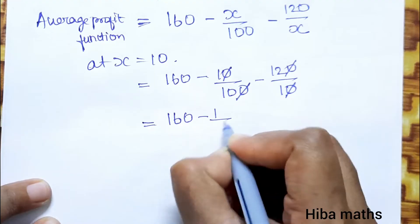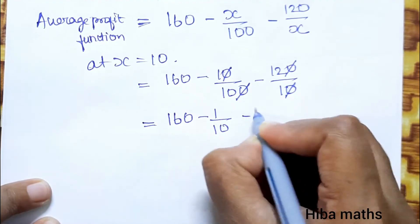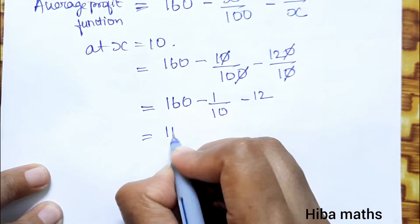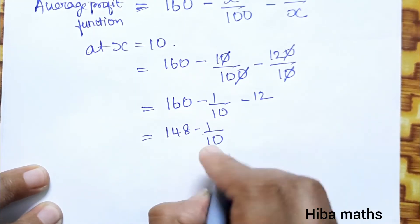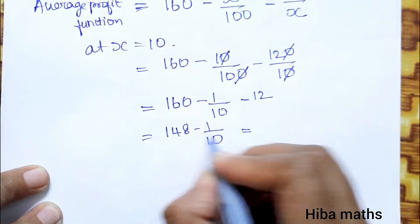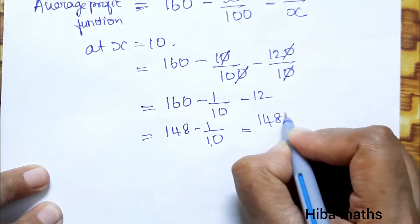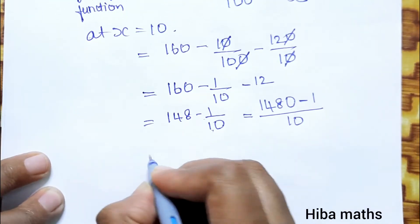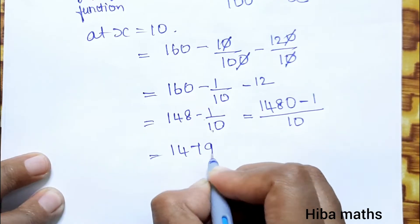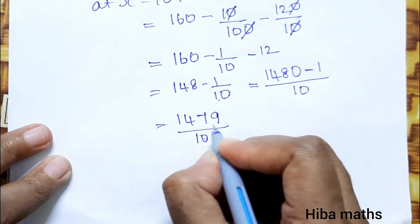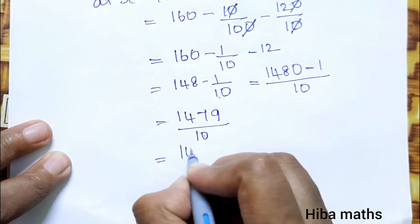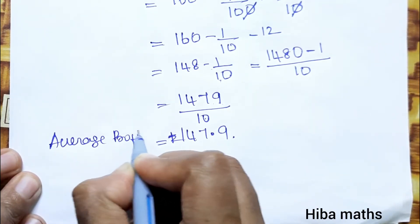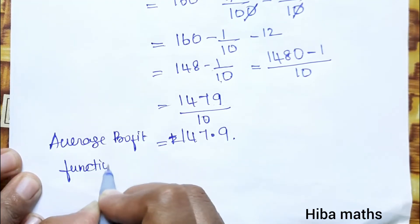Simplifying: 160 - 1/10 - 12 = 148 - 1/10. Cross multiplying: (1480 - 1)/10 = 1479/10 = 147.9. This is the average profit at x = 10.